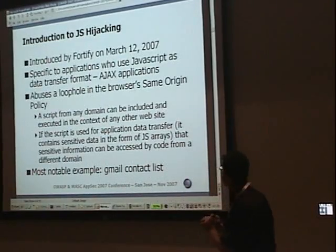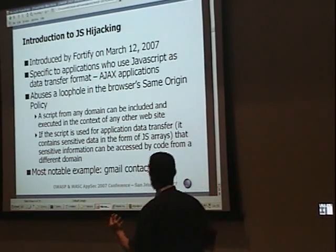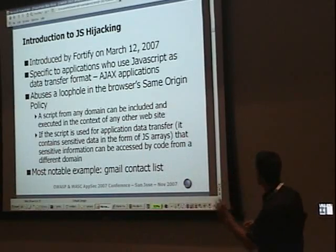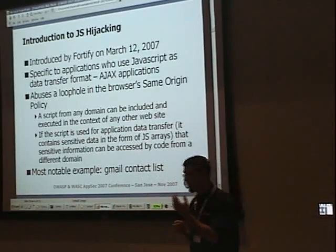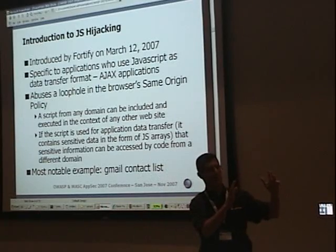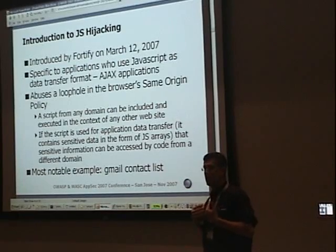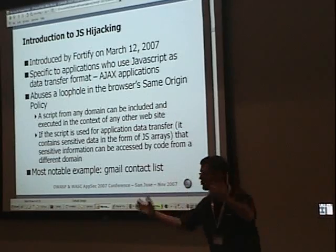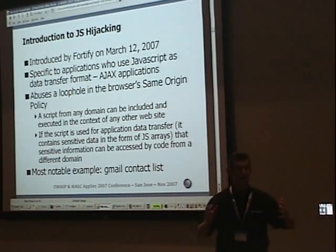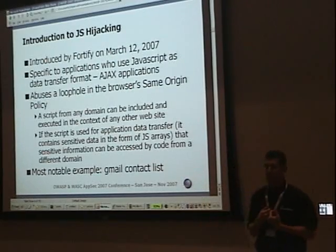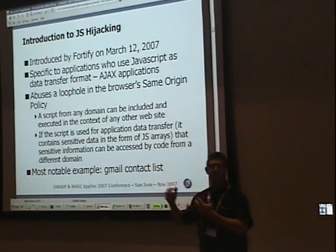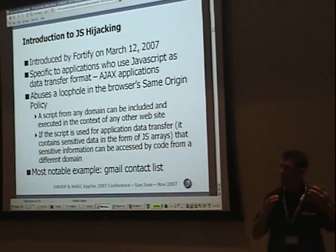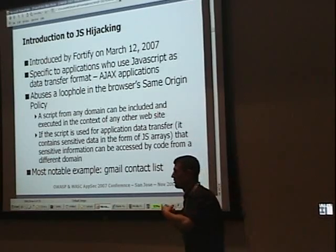So what is JavaScript hijacking? It was introduced by Fortify this year, and it is specific to applications that use JavaScript for data rather than just application logic. It uses a loophole in the browser's same-origin policy — a script from any domain can be included and executed in the context of another website. This means that everything within that script is accessible to the including page's code. And if this script happens to contain an array with sensitive information, that information is accessible to scripts from that other domain.